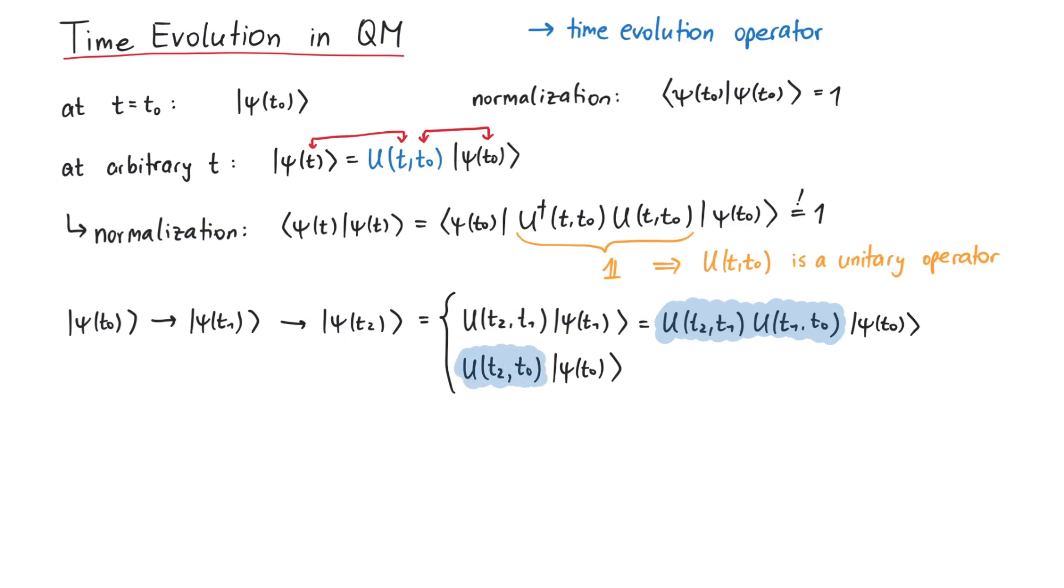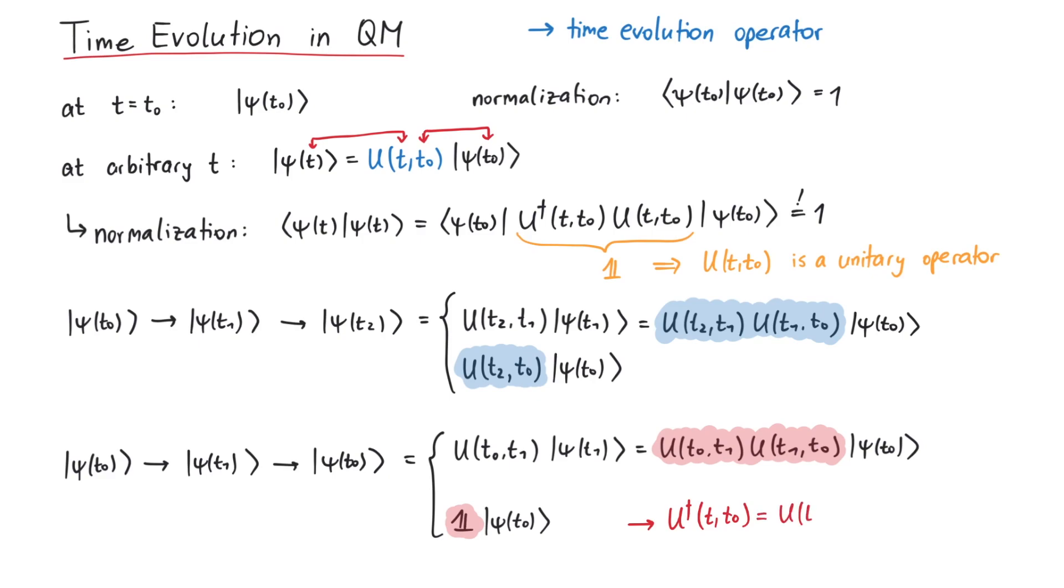And since going from t0 to t1, and then from t1 back to t0, must be the same as the identity operator, we see that the time-evolution operator can be written with a dagger by exchanging its two arguments.